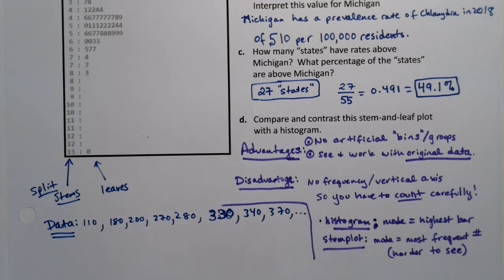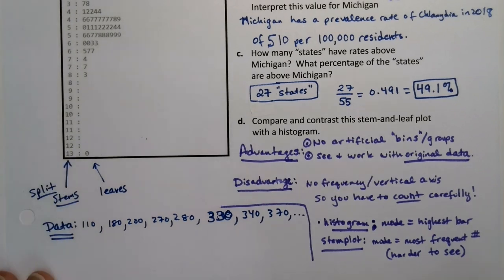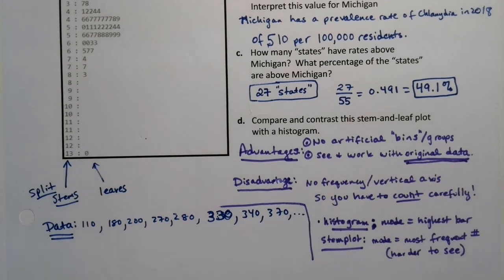But again, what's really nice about them is that you actually have your original data, and you can really see that. That's a really nice feature for these. So it's a big advantage. So there are times where we use histograms, there are times when we use stem-and-leaf plots. They both are useful.